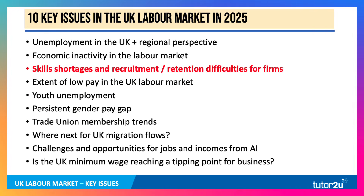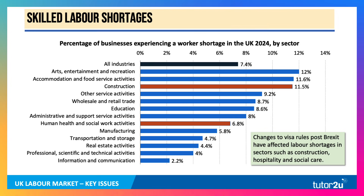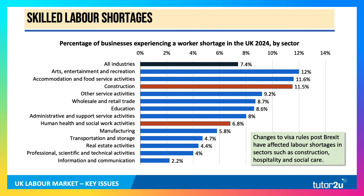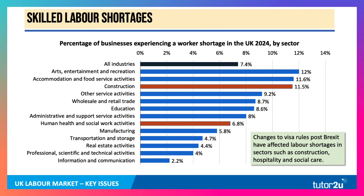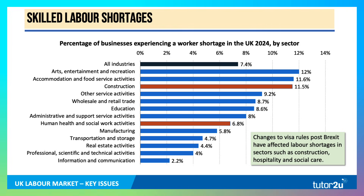Let's look at skill shortages and recruitment and retention difficulties. This has been a major issue in the last two or three years, picked up by exam boards in questions. This is a survey of the percentage of businesses in the UK experiencing worker shortages in 2024. Overall, about 8 percent of industries are experiencing labour shortages. It's higher for arts, entertainment and recreation, higher in the hospitality sector and also in construction. Lower in information and communication, professional activities, and real estate. Changes to visa rules post-Brexit have affected labour shortages in sectors such as construction, hospitality and care.